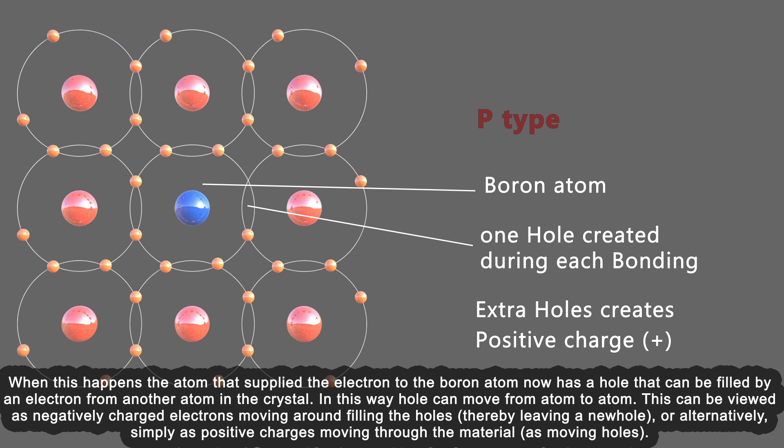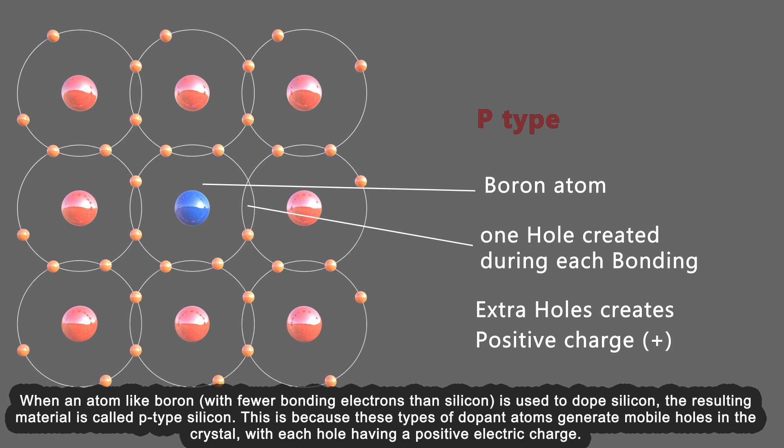When an atom like boron with fewer bonding electrons than silicon is used to dope silicon, the resulting material is called p-type silicon. This is because these types of dopant atoms generate mobile holes in the crystal, with each hole having a positive electric charge.